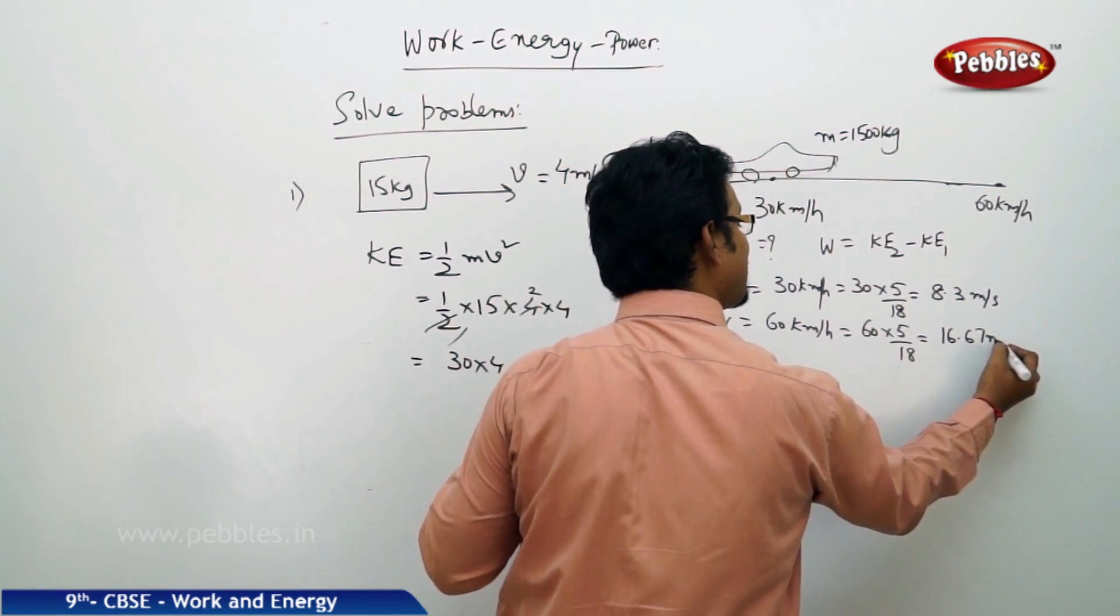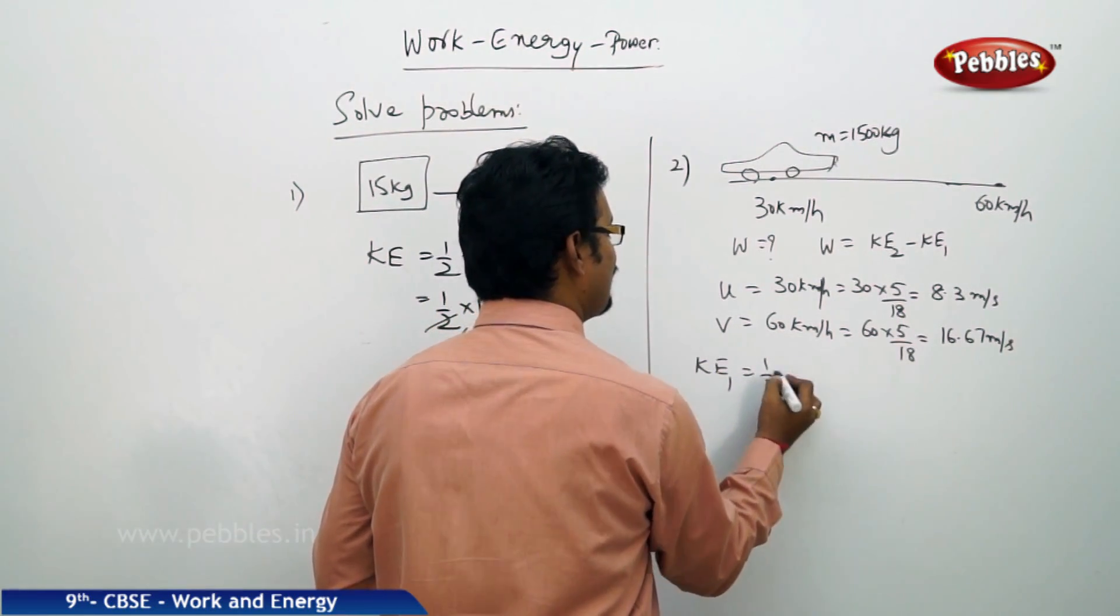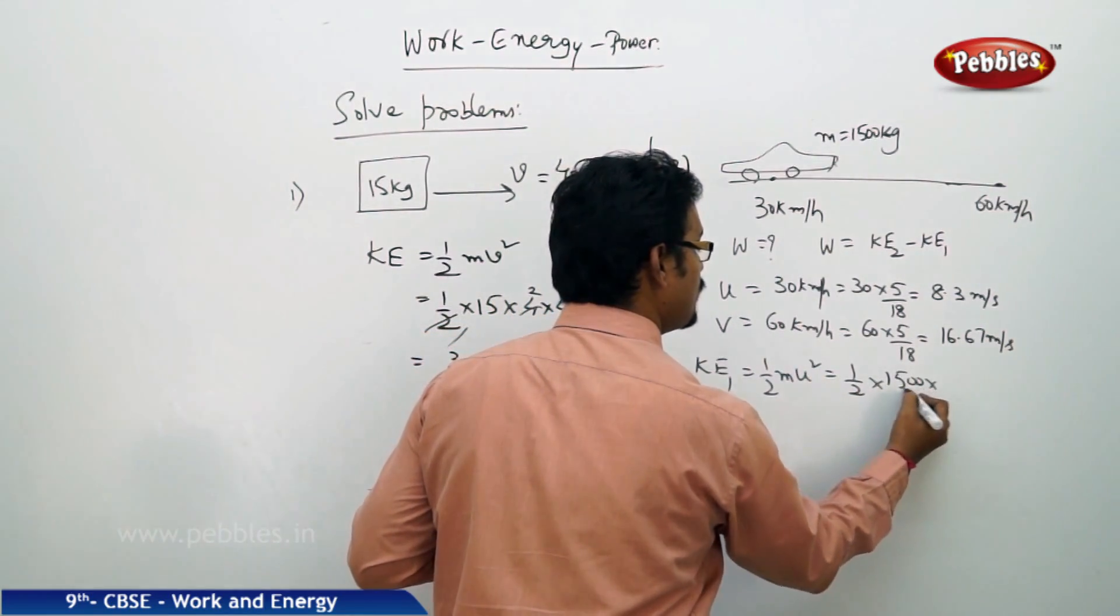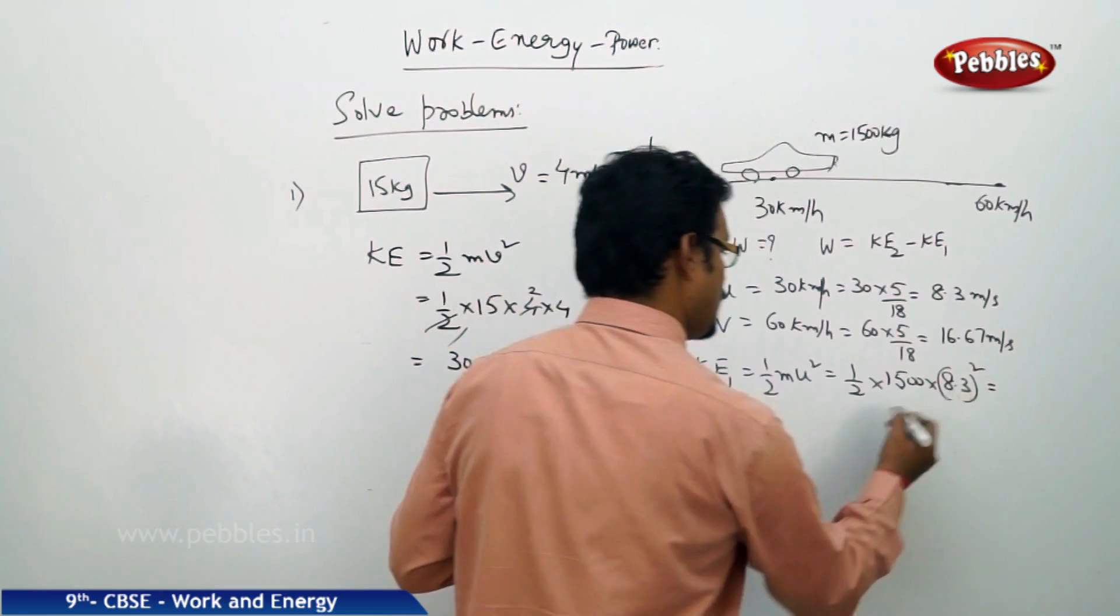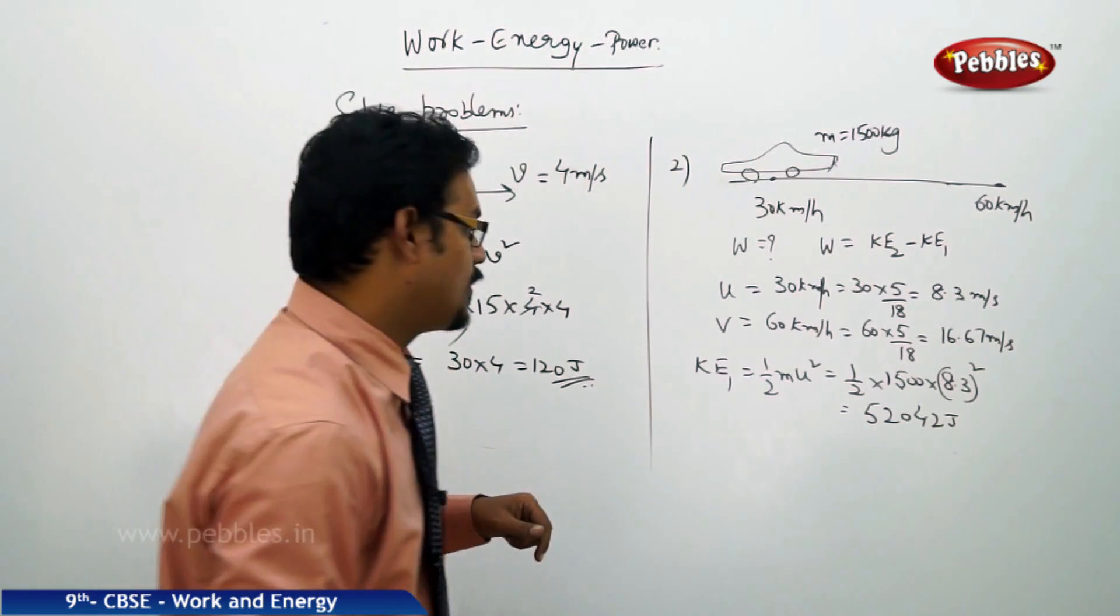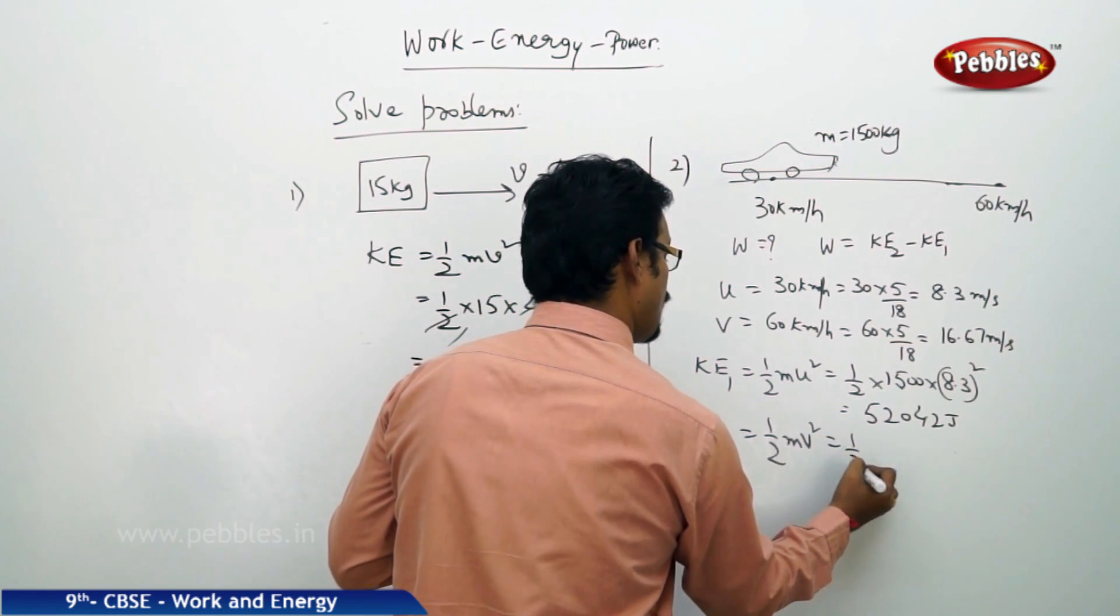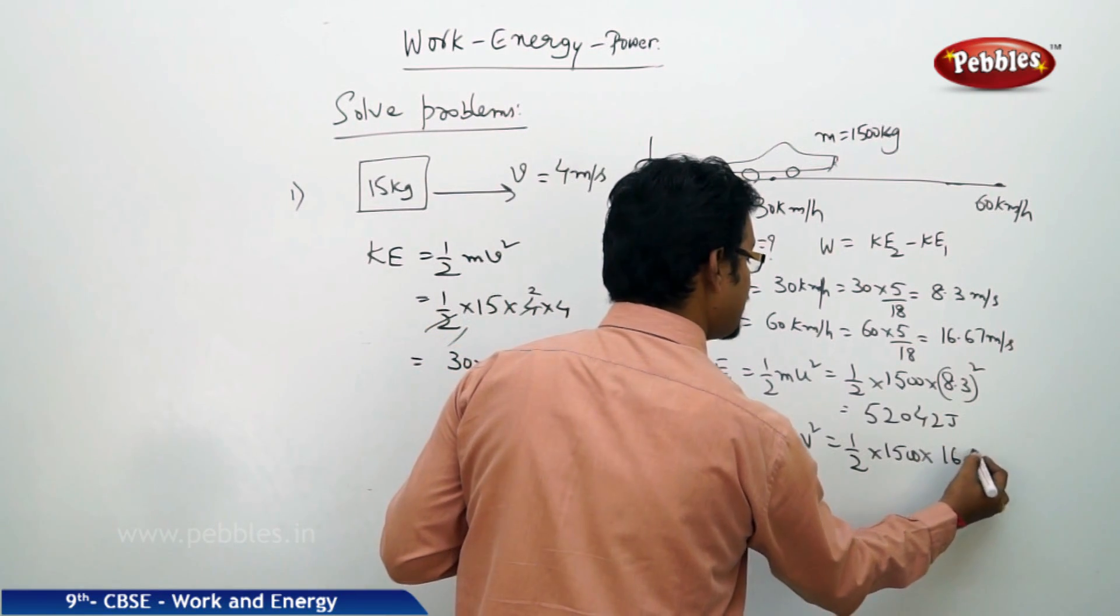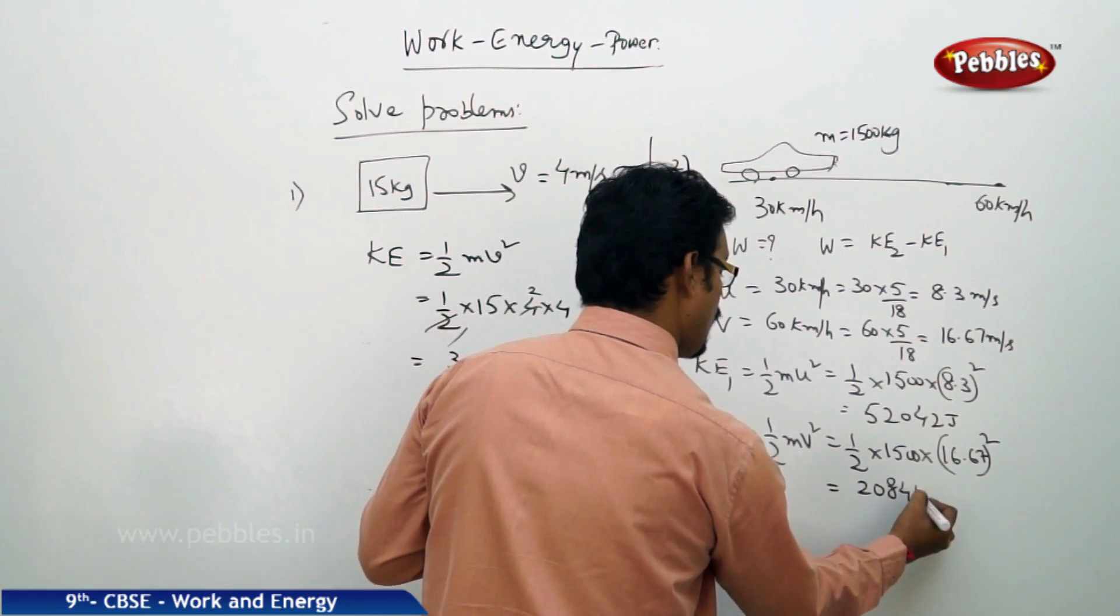Now initial kinetic energy: half mu squared, so half into mass 1500 into U squared 8.3 squared. If you simplify this you will get 52042 joules. Final kinetic energy: half mv squared, which is half into 1500 into final velocity squared 16.67 whole squared, and this value you will get 208417 joules.